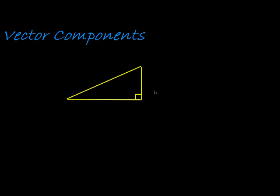In this right-angled triangle, let's call this angle theta. That's the opposite side, so I'll call it O. This is the adjacent side, so I'll call it A. And this slanted side is called the hypotenuse.